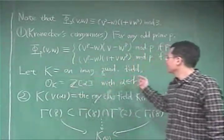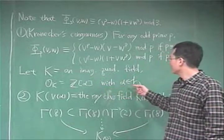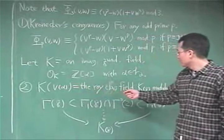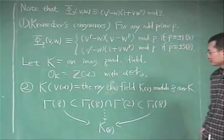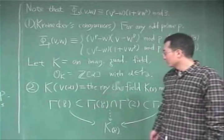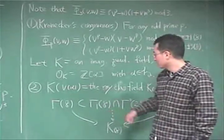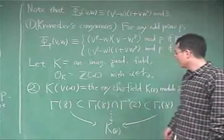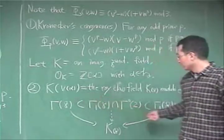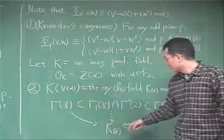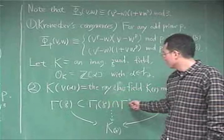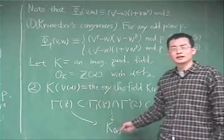Now, let K be an imaginary quadratic field, and O_α be the ring of integers with α contained in the complex upper half-plane H. Then the second result is that the field generated over K by the singular value V(α) must be the ray class field K_N modulo 8 over K. To prove this, we first show that V(τ) is a Hauptmodul for a certain congruence subgroup. Another result, joint with my advisor, says that for a positive integer N, Γ(N) and Γ₁(N) give the same ray class field K_N over K. In this case, this congruence subgroup contains Γ(8) and is contained in Γ₁(8), and these two congruence subgroups give the same ray class field K_N over K. Thank you.